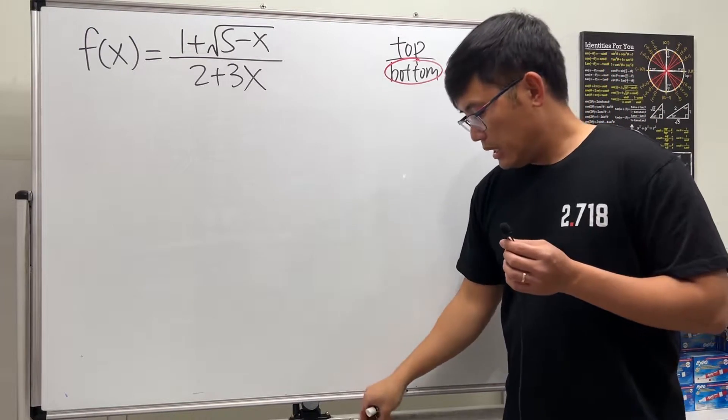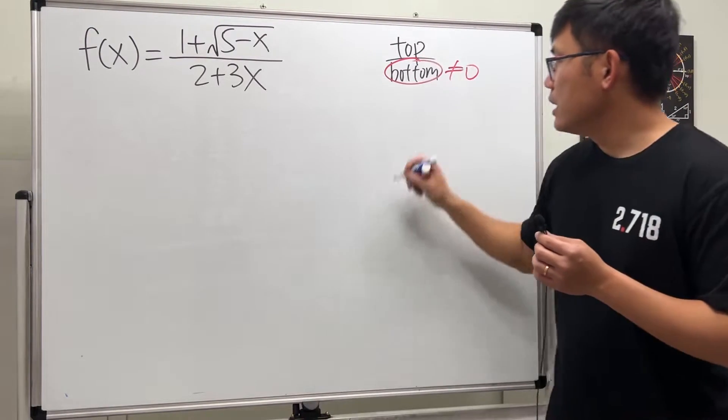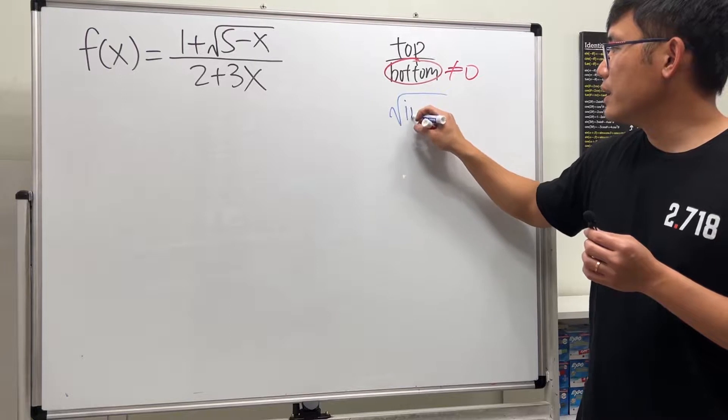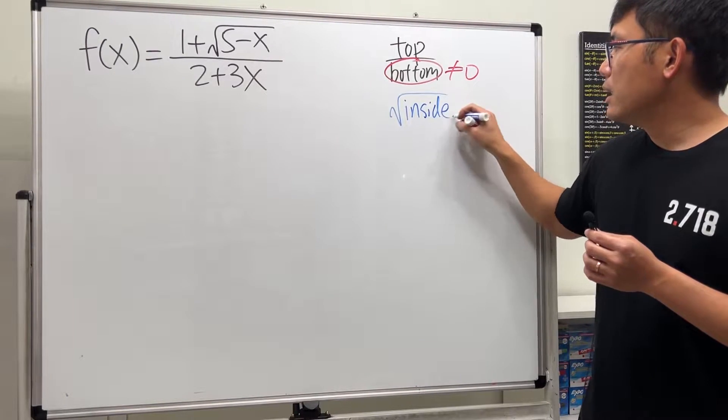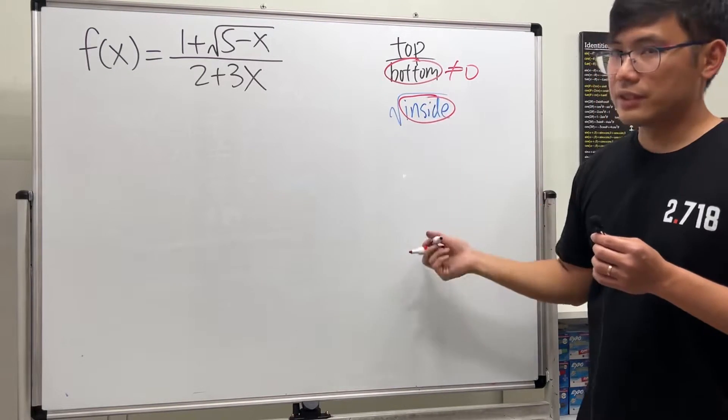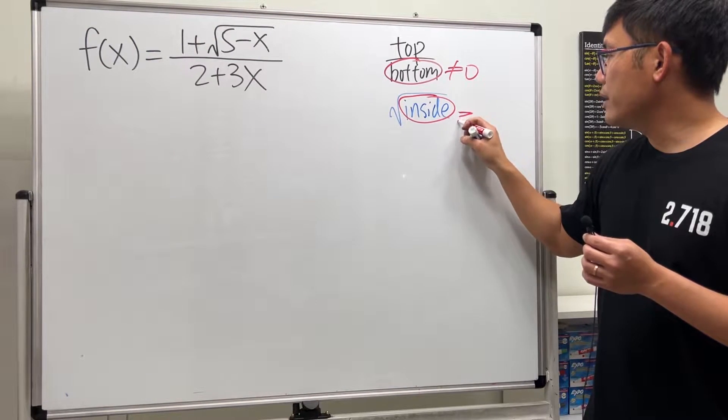The other condition is if we have a square root, then the inside of the square root has to be greater than or equal to zero, because otherwise we will get the so-called imaginary number.